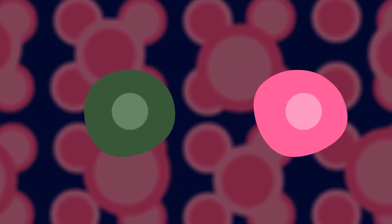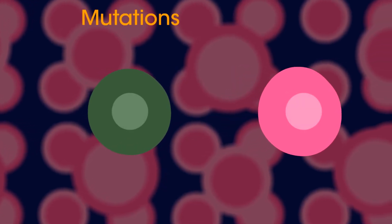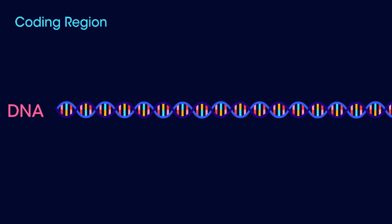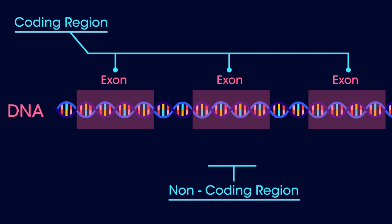When cells divide by mitosis, the DNA is replicated and sometimes mistakes are made. These are called mutations. Lots of mutations are silent. They have no effect on the cell because they occur in non-coding regions of the DNA.